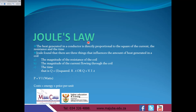Let's take Joule's law. The heat generated in a conductor is directly proportional to the square of the current, the resistance, and the time. There are three things that influence the amount of heat generated in a coil: one, the magnitude of resistance of the coil; two, the magnitude of current flowing through the coil; and three, the time. So Q equals I squared times by R times by T, or Q equals V times by I times by T. We also calculate power, which will be equal to V times by I in watts, and also we calculate cost, which will be equal to energy times by price per unit.